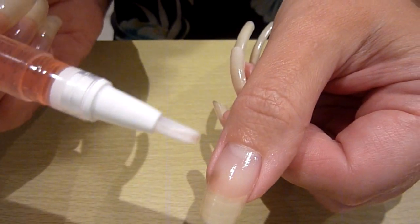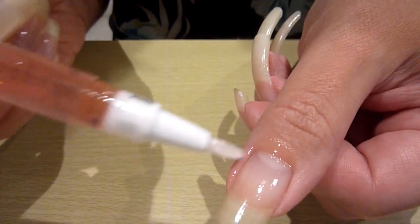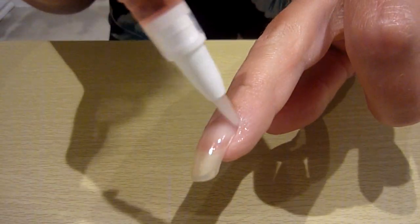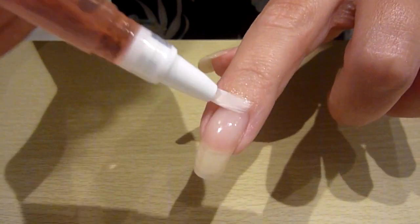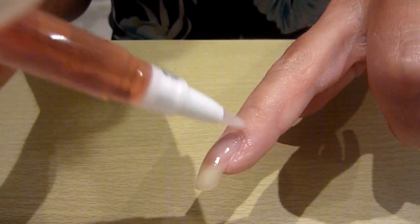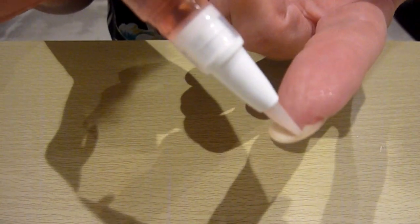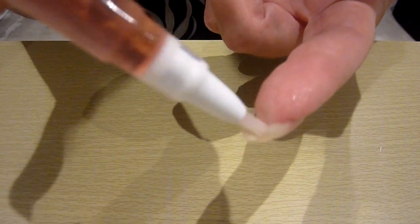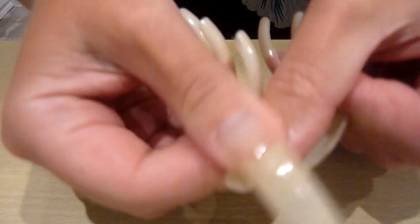So what I normally do is I paint all the way around the cuticle, around the sides of the nail there, on the nail. And then what I also do is go in there as well, in between the skin and the nail. And then I'll just rub it in.